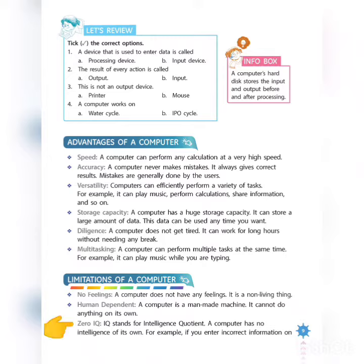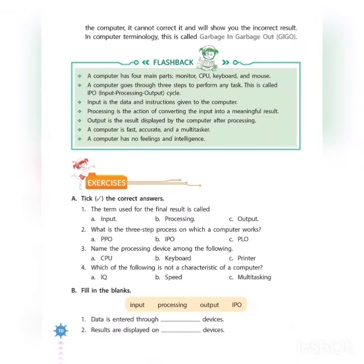And the last one is zero IQ. IQ stands for intelligent quotient. A computer has no intelligence of its own. For example, if you enter incorrect information on the computer, it cannot correct it and will show you the incorrect result.